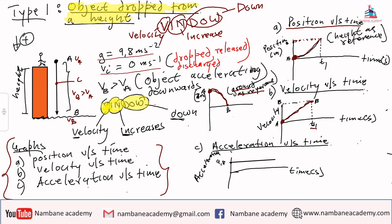We said acceleration is constant throughout, it is 9.8, so it is a positive 9.8 because now we chose that downward is positive. So this was type one.